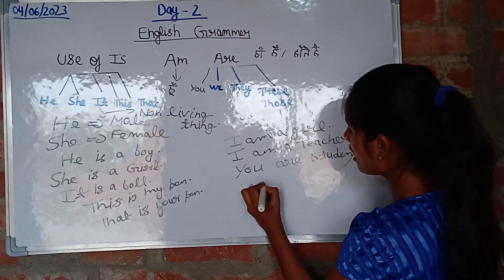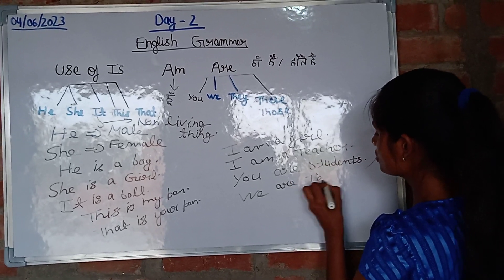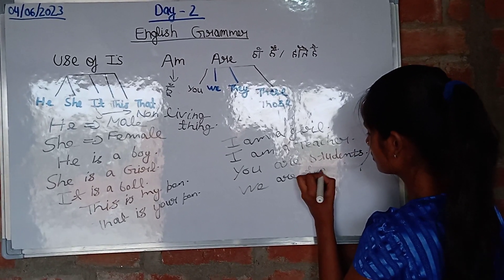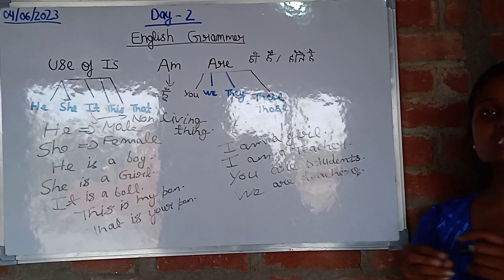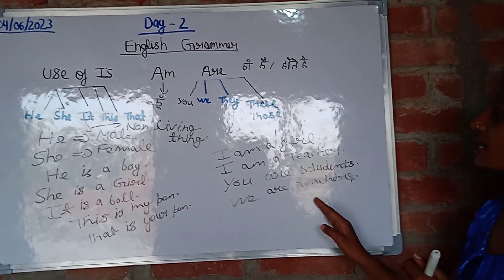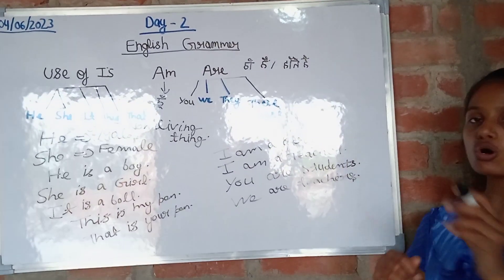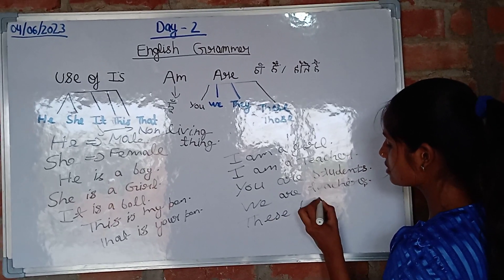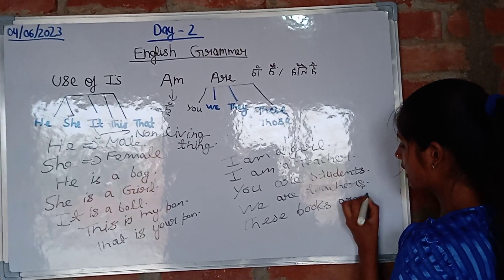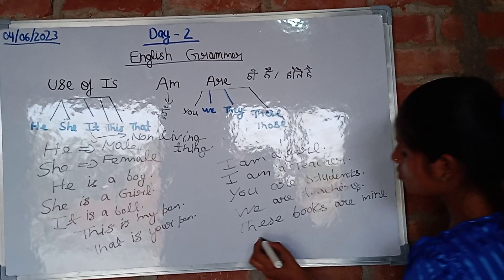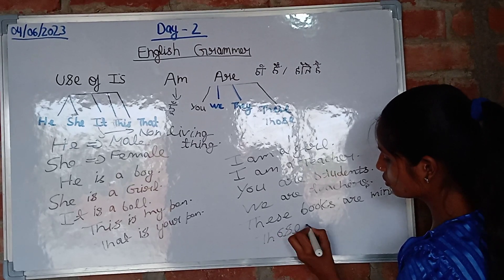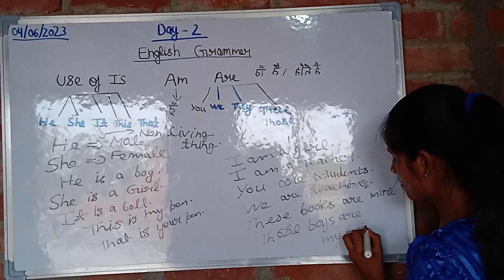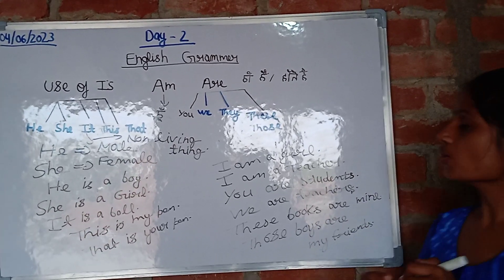We are teachers — 'teachers' is plural, so we use 'are'. Similarly, 'these' is also plural: 'these books are mine.' And 'those boys are my friends' — 'those' is also used with 'are' for plural.